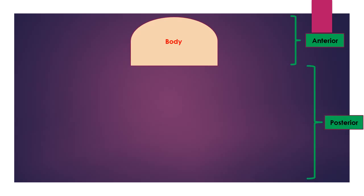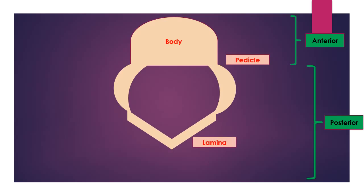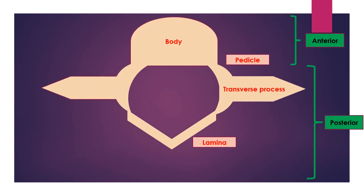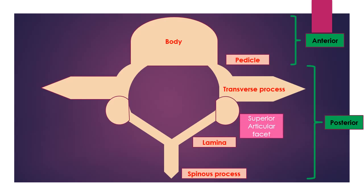Each vertebral arch consists of paired pedicles anteriorly and paired laminae posteriorly. The vertebral arch gives rise to seven processes: two transverse processes laterally, one spinous process posteriorly, two superior articular facets and two inferior facets which cannot be shown in this diagram.